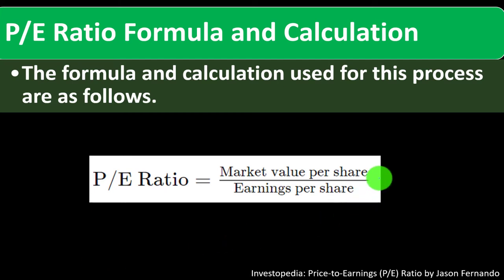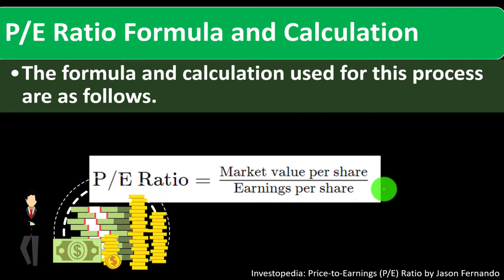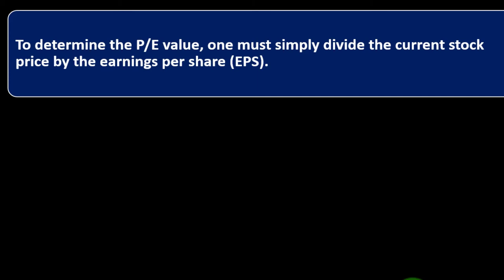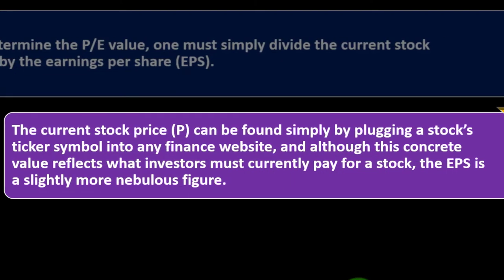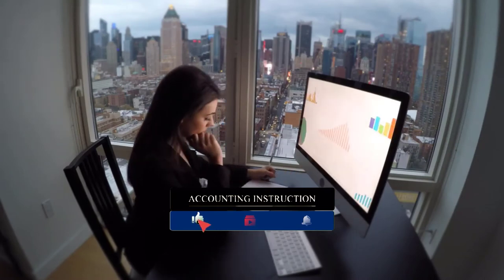The PE ratio formula: PE ratio equals market value per share — the share price determined by market supply and demand — divided by the earnings per share. We discussed calculating earnings per share in prior presentations. To determine the PE value, simply divide the current stock price by the earnings per share. The current stock price can be found by plugging a stock's ticker symbol into any finance website.